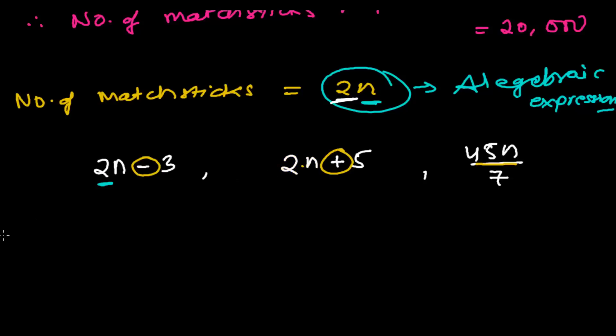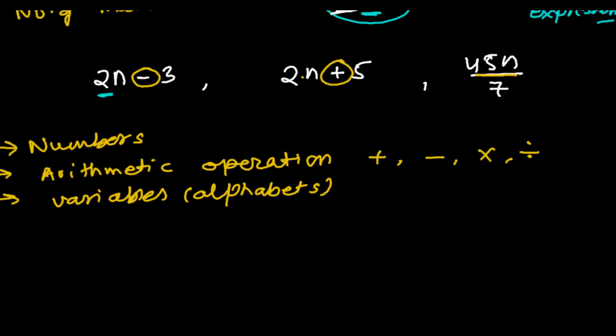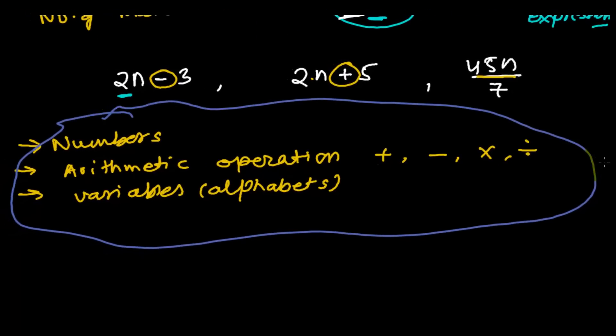All the time, remember that there will be numbers in an algebraic expression, arithmetic operations like plus, minus, multiplication, division, and of course there will be some variables. Variables will be in the form of alphabets. Always consider these three things - mostly you'll see them in an algebraic expression. Let me give you some more examples.